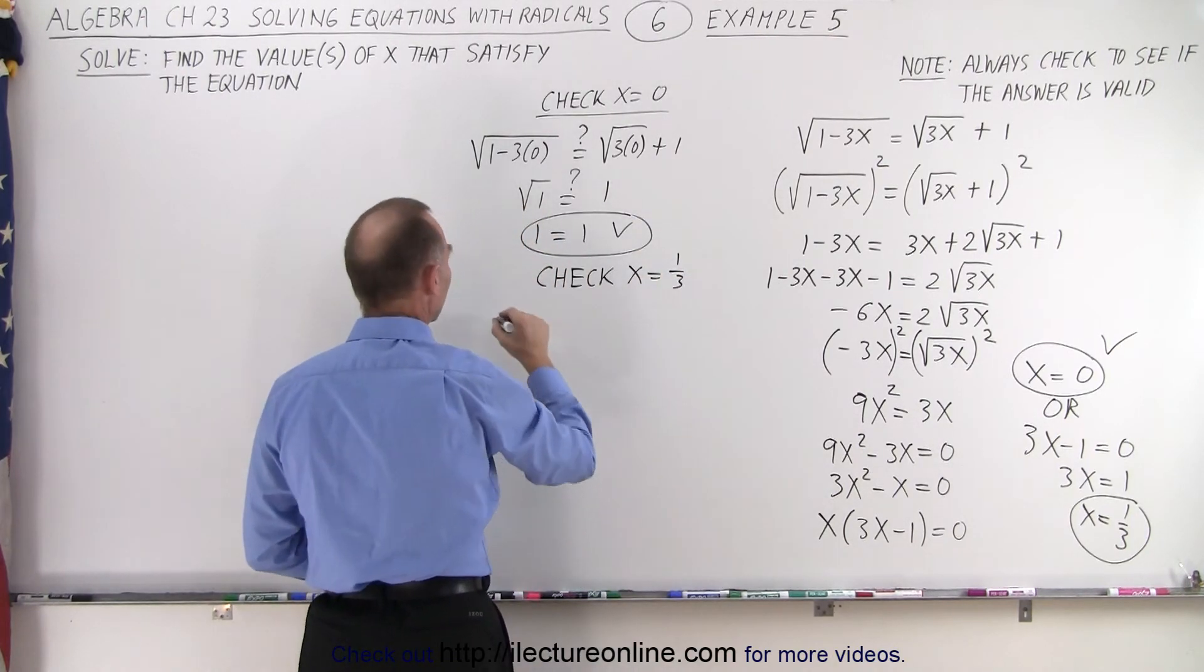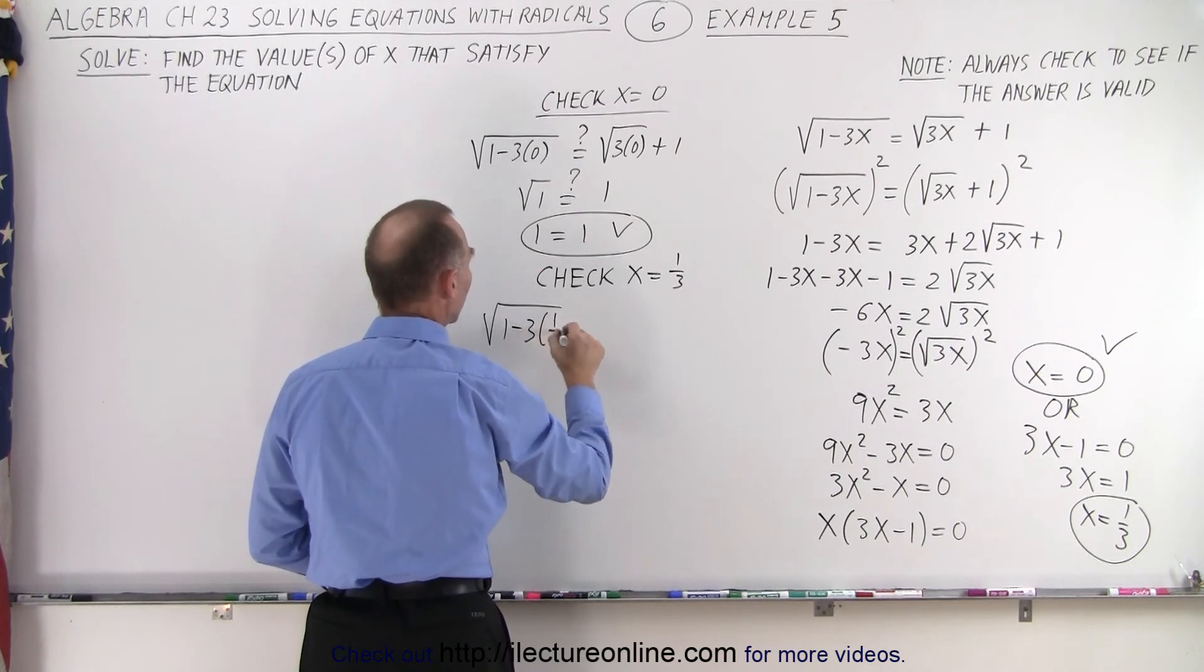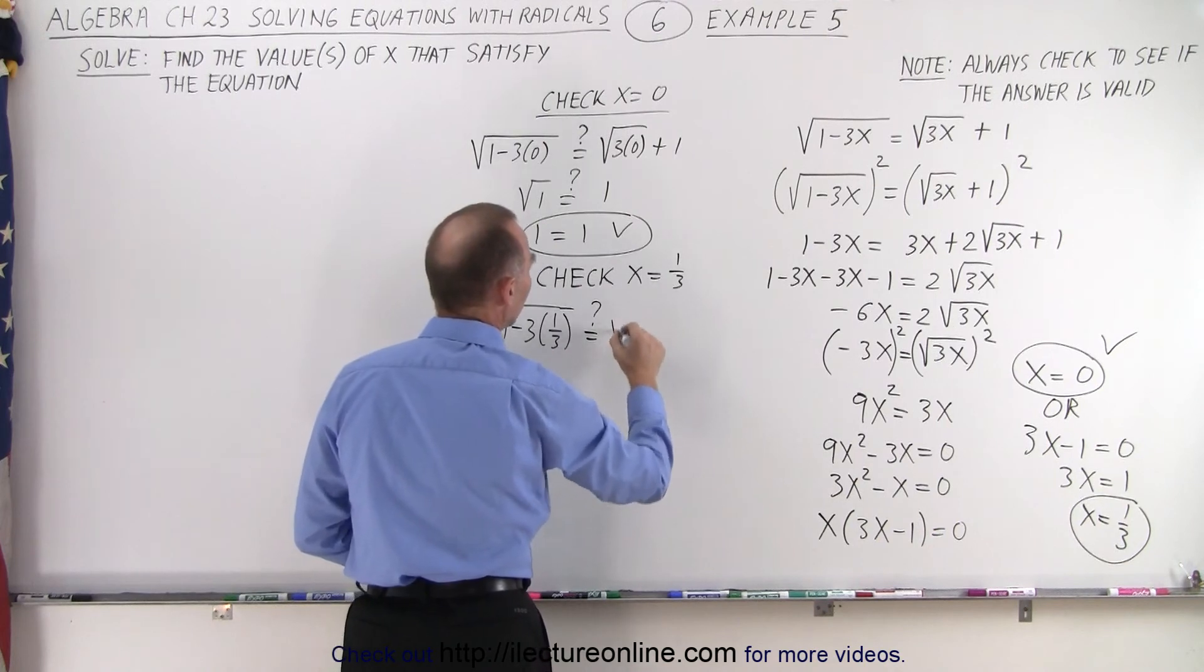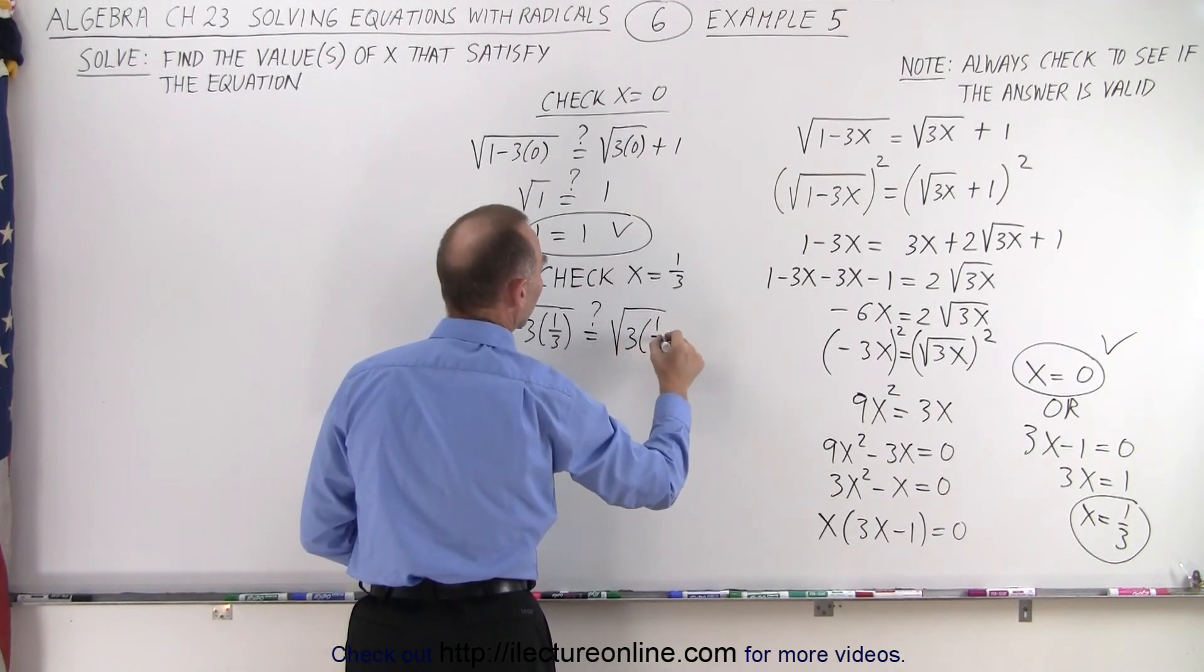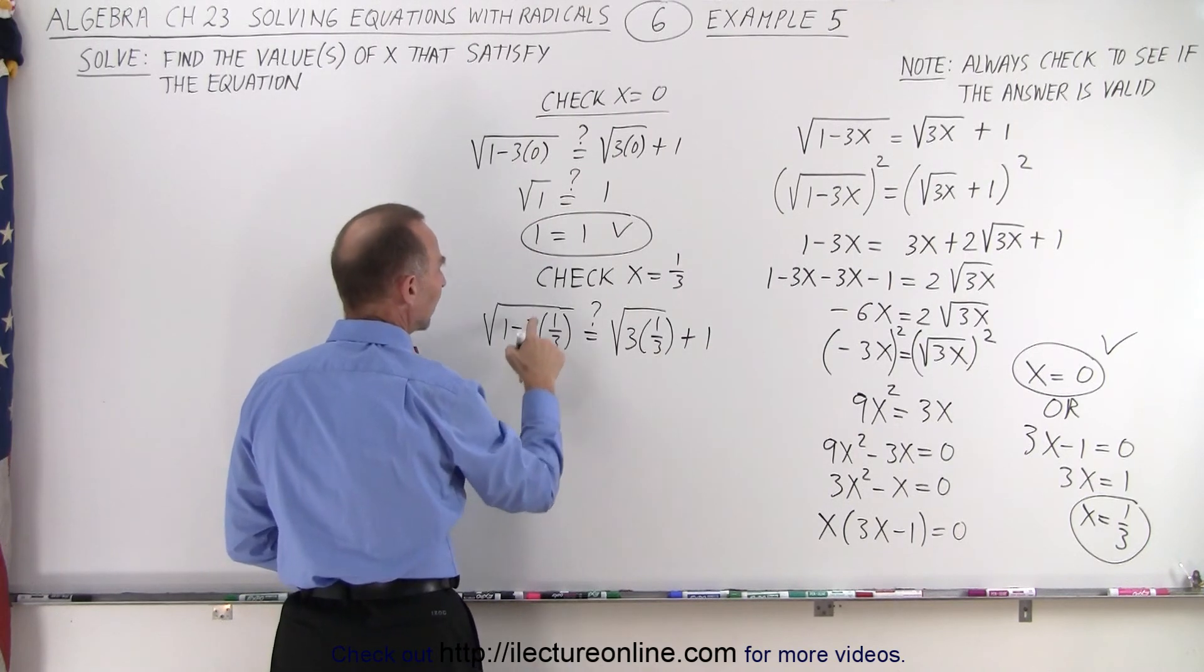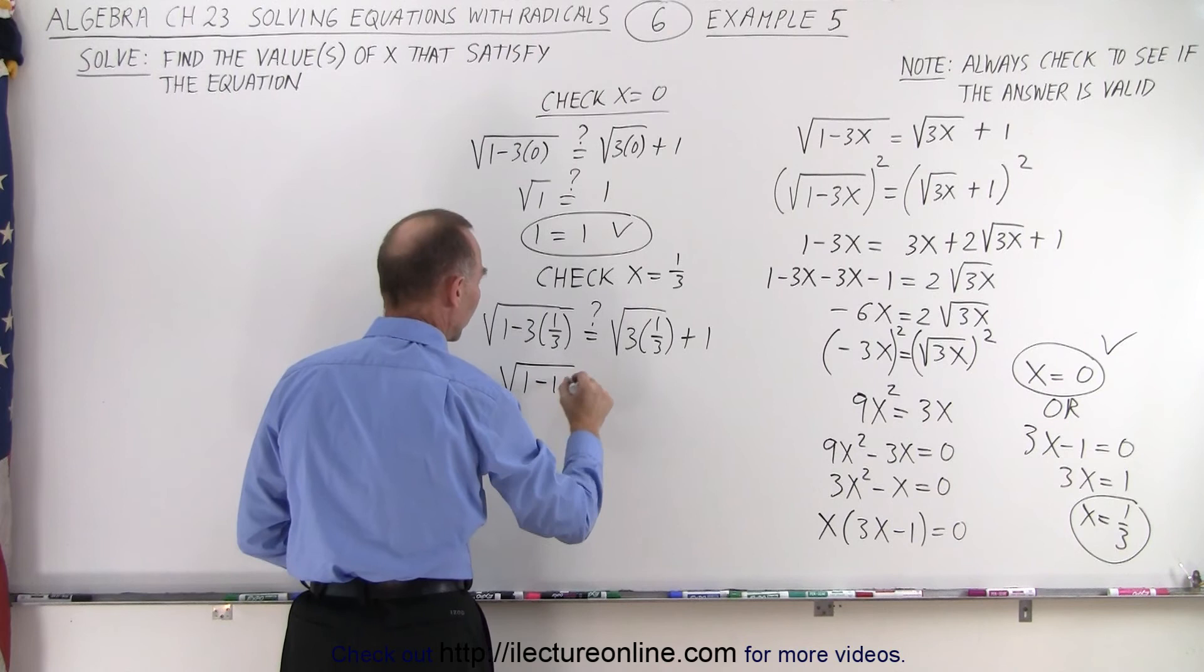We'll plug that into our equation. We get the square root of 1 minus 3 times 1 third. Is that equal to question mark, the square root of 3 times 1 third plus 1. Okay, here, minus 3 times 1 third, that means minus 1. So we get the square root of 1 minus 1.